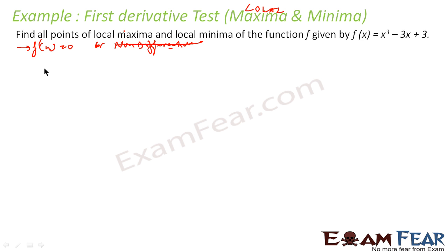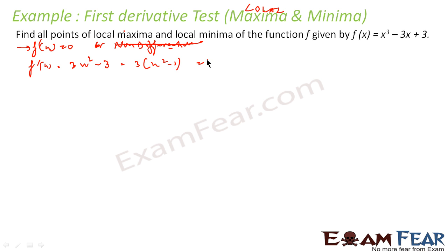So let us find f'(x). f'(x) is nothing but x³ becomes 3x² minus 3x becomes 3, and 3 becomes 0. That is 3(x² - 1), which is 3(x + 1)(x - 1) = 0. So I get x = 1 or x = -1.